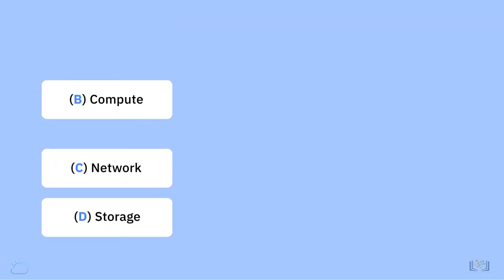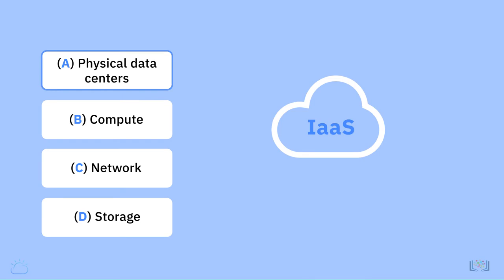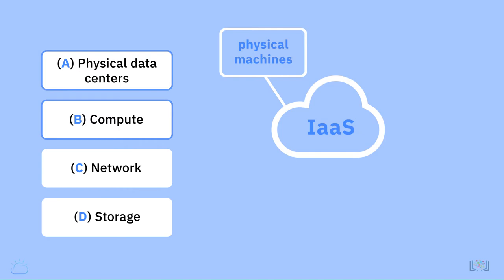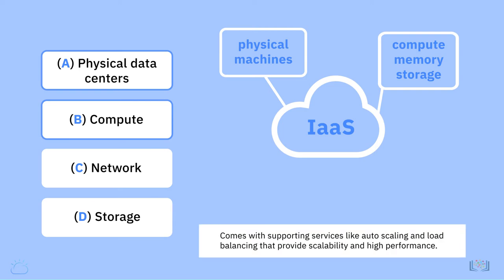Let's look at the key components of cloud infrastructure. Physical data centers: IaaS providers manage large data centers that contain the physical machines required to power the various layers of abstraction on top of them. In most IaaS models, end users do not interact directly with the physical infrastructure, but experience it as a service provided to them. Compute: IaaS providers manage the hypervisors, and end users programmatically provision virtual instances with desired amounts of compute, memory, and storage resources. Cloud compute typically comes with supporting services like auto-scaling and load balancing that provide scalability and high performance.